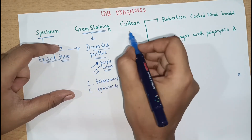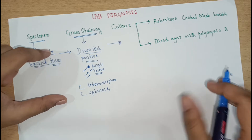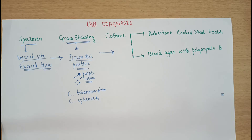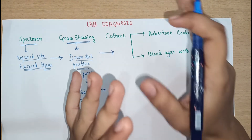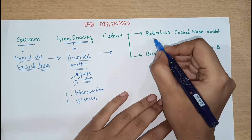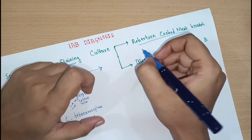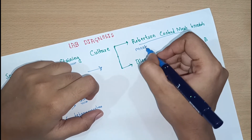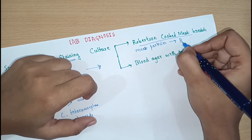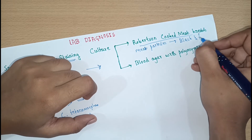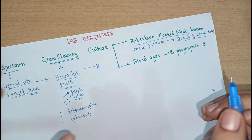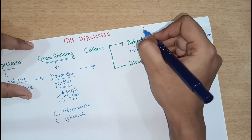As this is an obligate anaerobic bacteria, Robertson's Cooked Meat Broth (RCMB) is the preferred culture media. It contains meat particles — if the specimen contains Clostridium tetani, the meat particles will turn black and produce a foul smell. If you observe black discoloration and foul odor, it is confirmatory — 100% confirmed that the given sample contains Clostridium tetani.